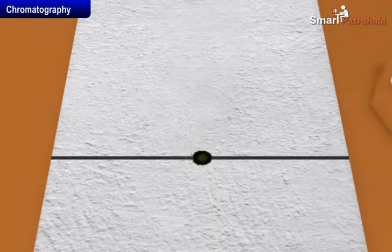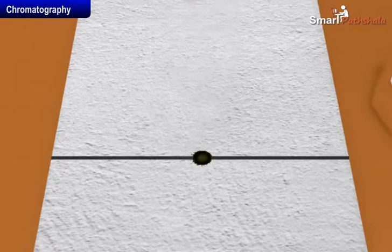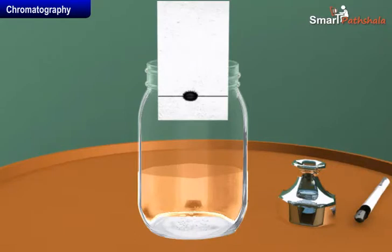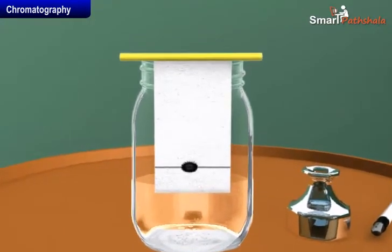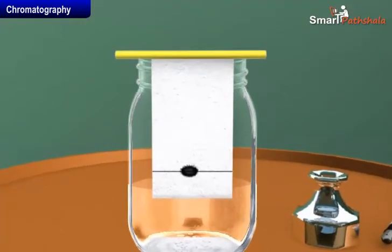Lower the filter paper into a glass jar containing water so that the drop of ink on the paper is just above the water level and leave it undisturbed.